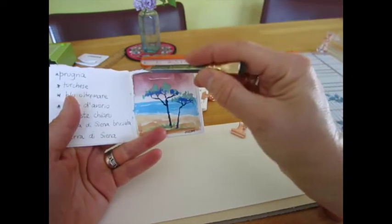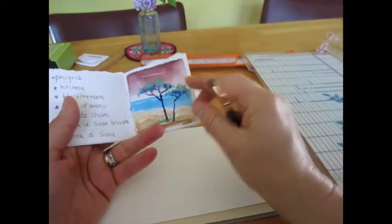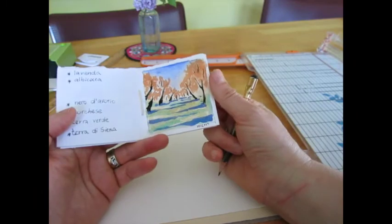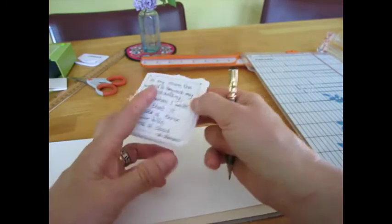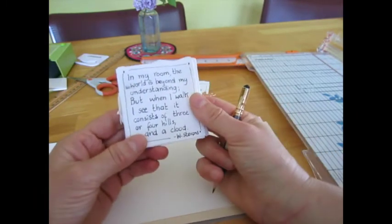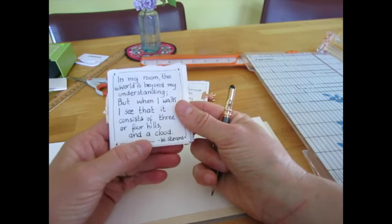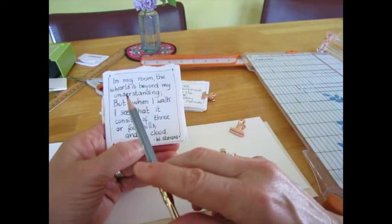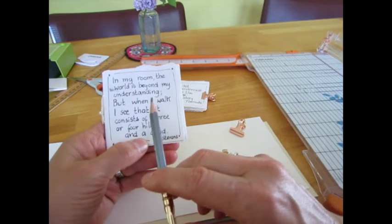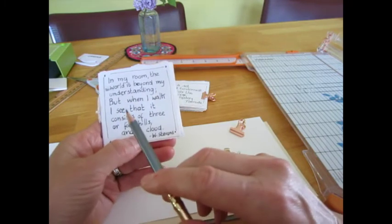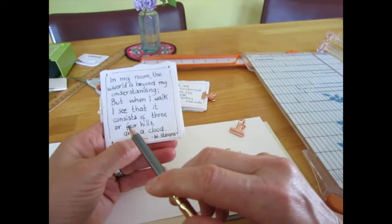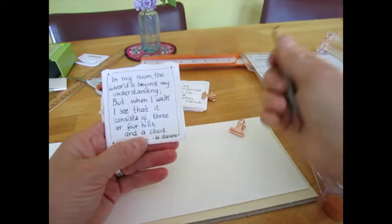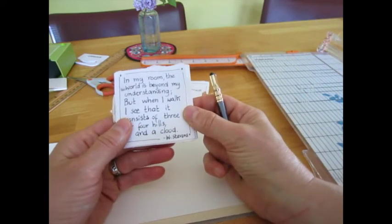Another one was about landscape, so the quotation I used from Wallace Stevens for the cover is: In my room the world is beyond my understanding, but when I walk I see that it consists of three or four hills and a cloud. I thought this was an appropriate quotation for a little booklet of landscapes.